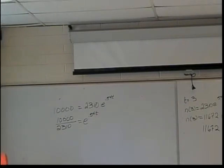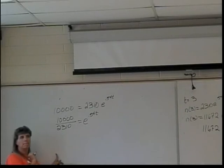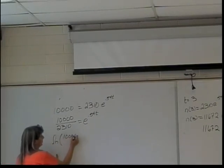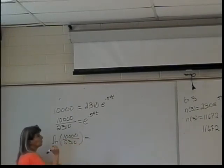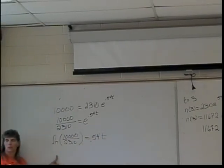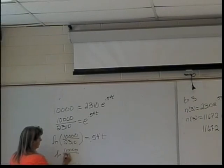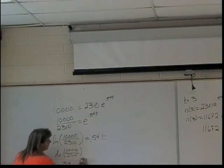And then change to logarithmic form. What will the logarithmic form be? The natural log of 10,000 divided by 2310 equals 0.54t. And then, last but not least, divide both sides, so the natural log of 10,000 over 2310, all divided by 0.54, is equal to t.